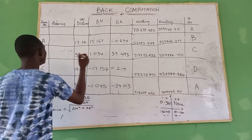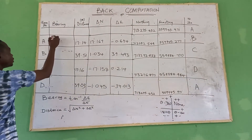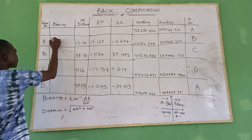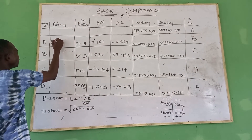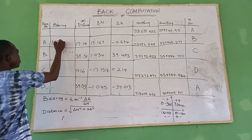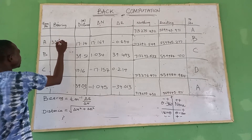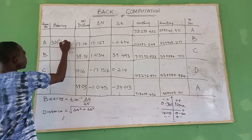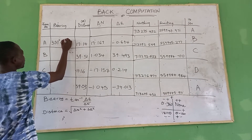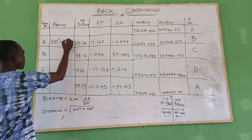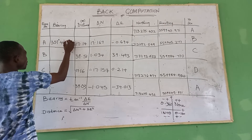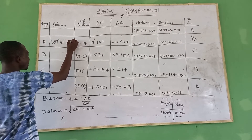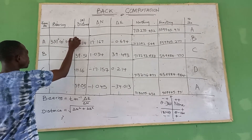So what do we have here? 357 degrees, 41 minutes, 5.997 seconds.